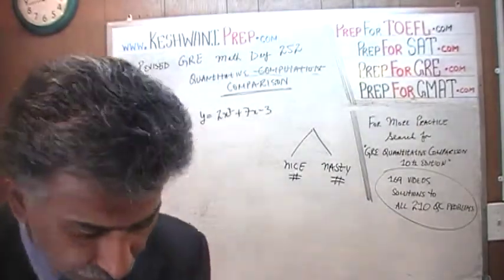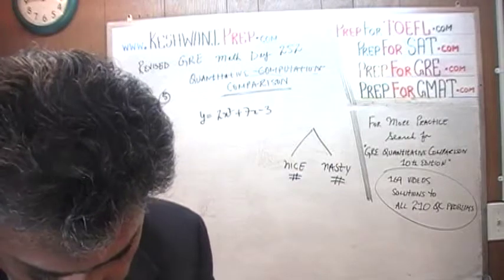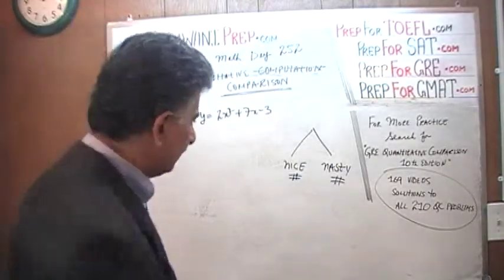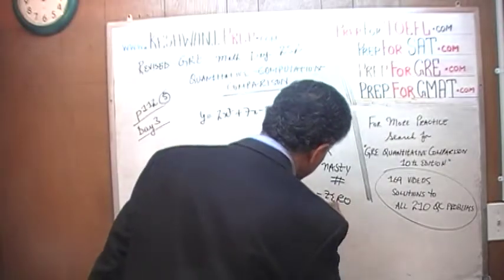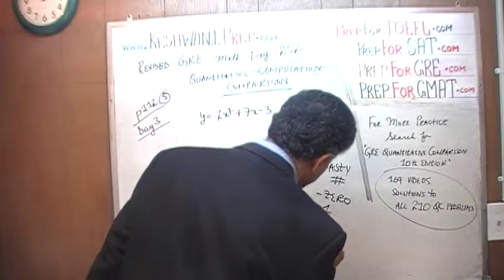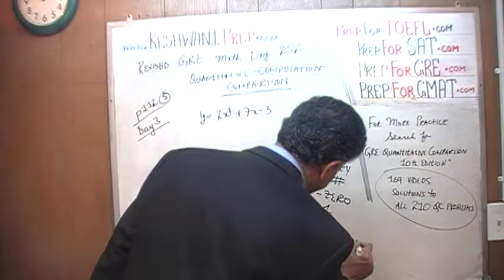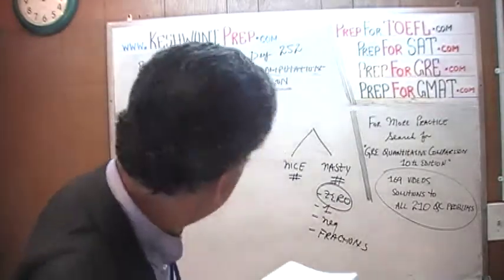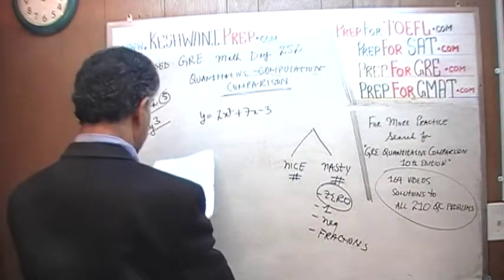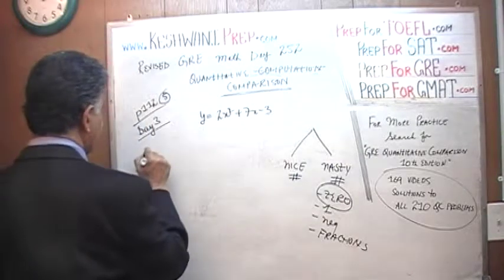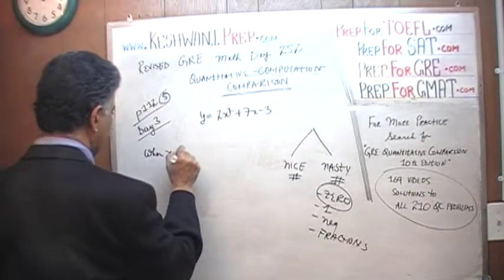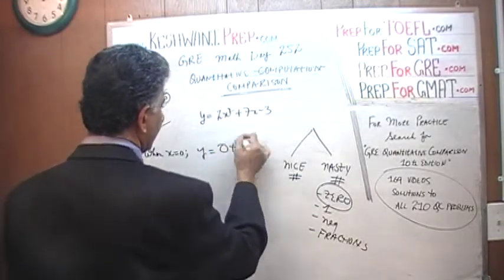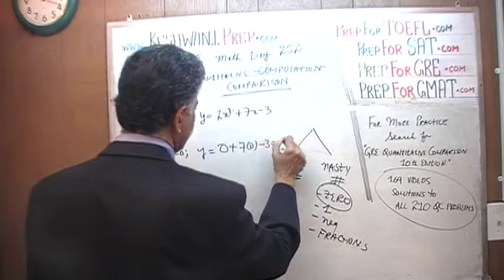Nice and nasty numbers — that is what we are going to do here. I am going to plug in nasty numbers. The nastiest of all, as we know, is zero, then comes one, then comes negatives, and then comes fractions. Let's plug in zero. If x is zero, then y equals two times zero squared — which is zero — plus seven times zero — which is zero — minus three, so y becomes negative three.